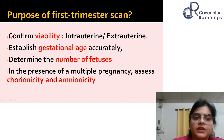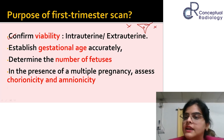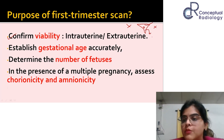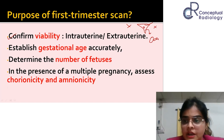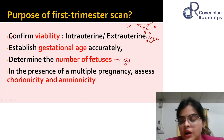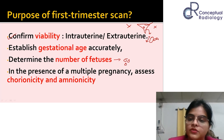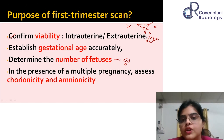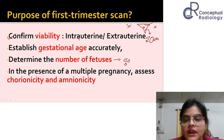The objectives of the first trimester scan are: first, to confirm viability — whether the pregnancy is intrauterine or extra-uterine, and whether there is an embryo with cardiac activity; second, to establish gestational age; third, to determine the number of pregnancies — twin, triplet, or quadruplet; and fourth, for multiple pregnancies, to establish chorionicity and amnionicity. Sometimes you may see three sacs but embryos in only two, indicating a vanishing twin or a failed sac. All these objectives can be well served at 11 to 14 weeks of pregnancy.